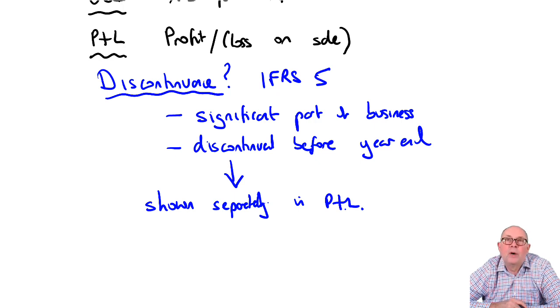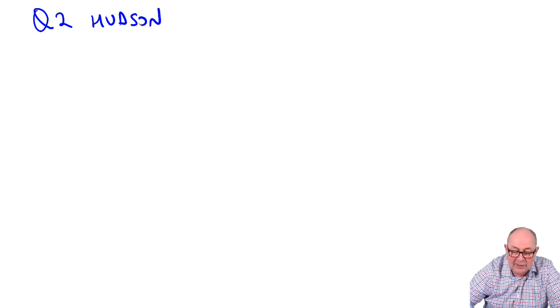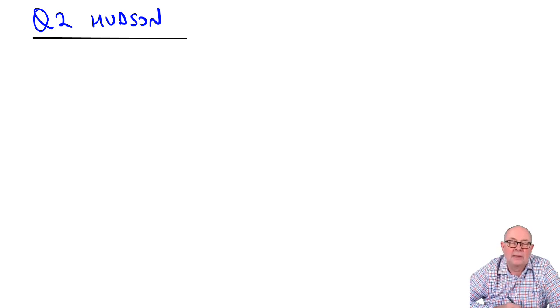Remember, although I quote standard numbers sometimes, you don't need to in the exam - there are no marks for standard numbers. Now we're going to look at Question 2, called Hudson. It's in three parts and includes an ethics element. The first part is about accounting knowledge.